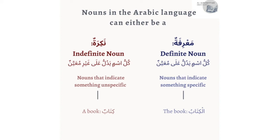As-salamu alaykum wa rahmatullahi wa barakatuh. Alhamdulillah, we're here with another video. In this video we're going to be talking about the ma'rifah and the nakara — the indefinite noun and the definite noun in the Arabic language.